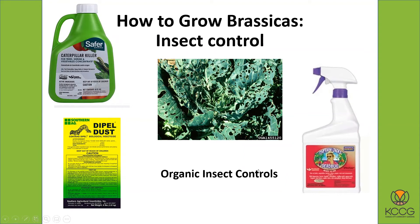There is another organic control product — this brand is called Captain Jack's Dead Bug Brew. It is relatively new on the market and is based on an organic material called spinosad, which is similar in some ways to BT — a natural organism that affects caterpillars and will kill them. Both work really well. This version comes ready to use — you don't have to mix it with water — and you can just spray it right on your plants.